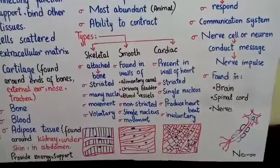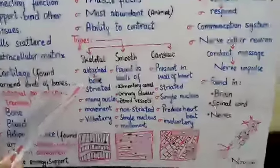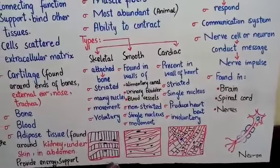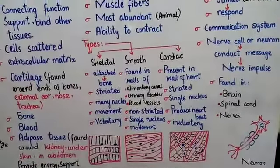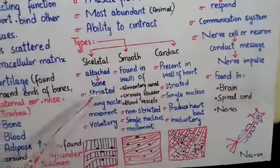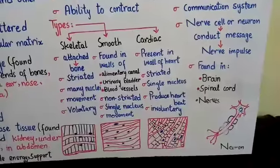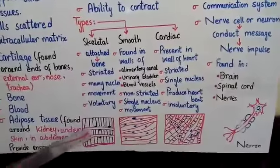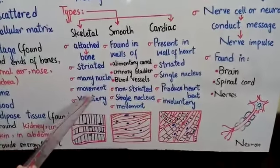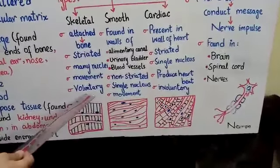Here you have three diagrams. Skeletal muscles are the type of muscle attached with bones. Skeletal muscles are striated muscles — meaning they have lines or strips visible in the diagram. As you can see, these black-colored lines show that they have strips. They contain many nuclei.